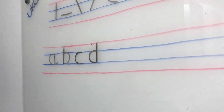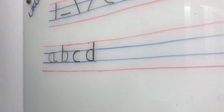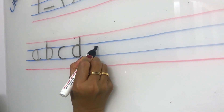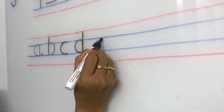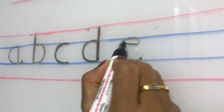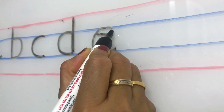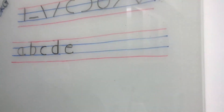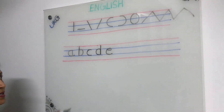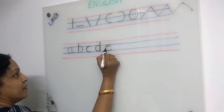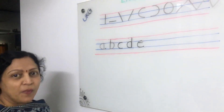Now we are writing small E. See here children. You should write a small sleeping line, then join the left curve, and go up and write small C shape. It becomes small E. Small sleeping line joining C makes small E.